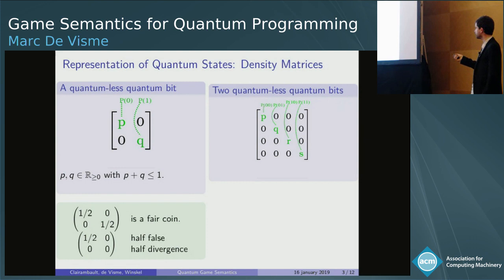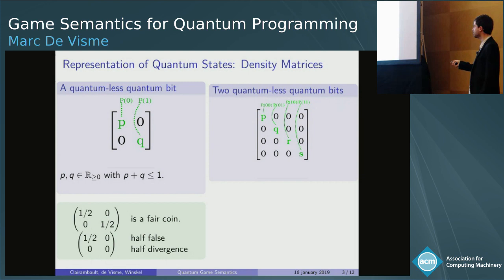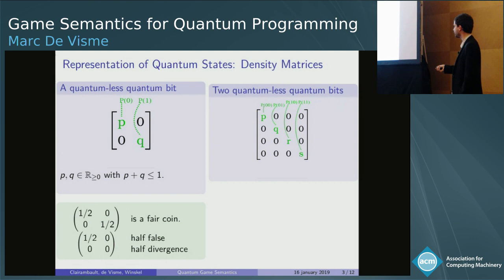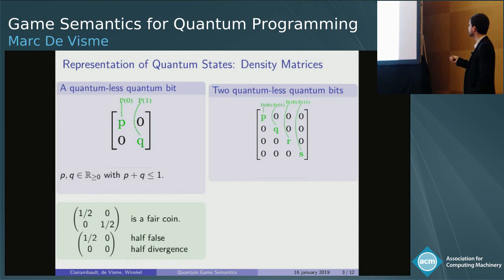In this talk we will use density matrices to represent quantum state, because that's the representation which is stable under probabilistic distribution. So if you take a quantum bit which has no quantum effect at all, we'll just have two coefficients that correspond to the probability of your quantum bit being zero if you measure it, and the probability of your quantum bit being one if you measure it. For example, this is a representation of a coin, and this will be the representation of something that half of the time diverges and half of the time is false.